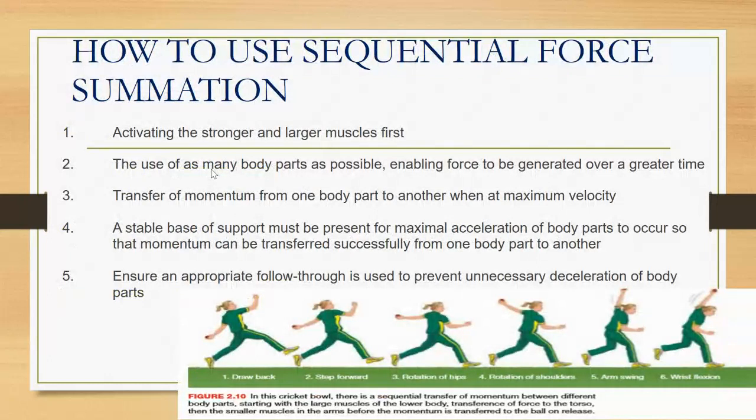How do you do this? What is the sequential force summation method? It starts by activating the stronger and larger muscle groups first. In order to generate as much force, you should start with the larger muscle group. Then use as many body parts as possible. The more body parts that are working together to generate this force, the more force you're going to be able to generate. It's also important to try and generate that over a greater period of time. If there's more time to apply that force, you've increased the impulse of that force. Force over time.